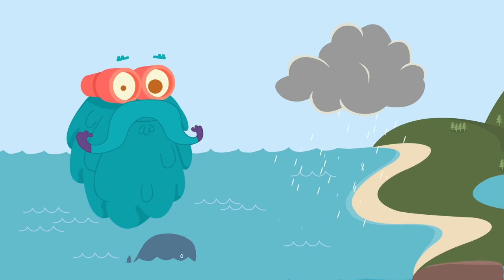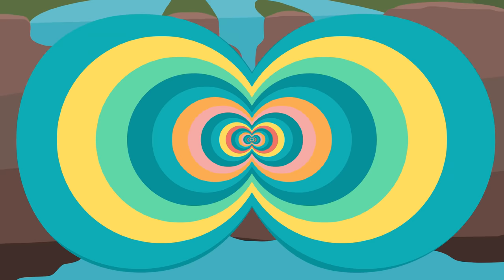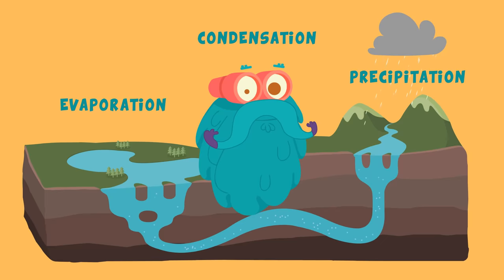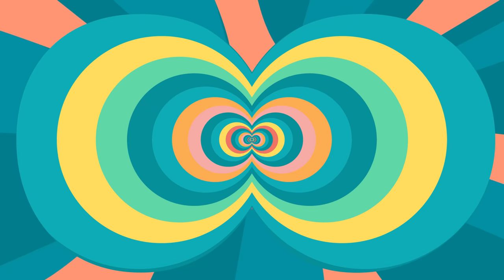As it rains, water gets collected in oceans, lakes, and rivers. It even seeps through the soil and becomes groundwater. Thus, the water cycle is a continuous process of evaporation, condensation, and precipitation.